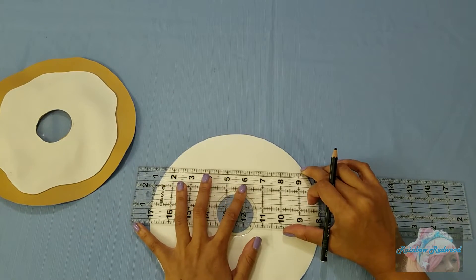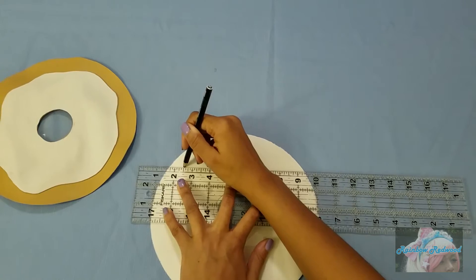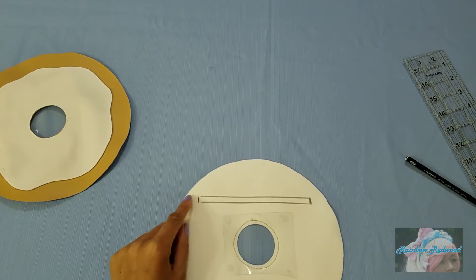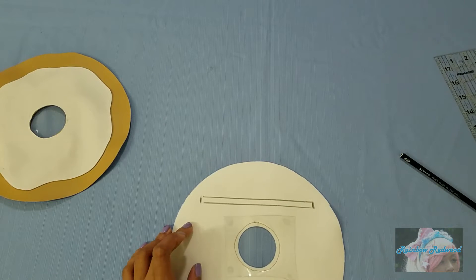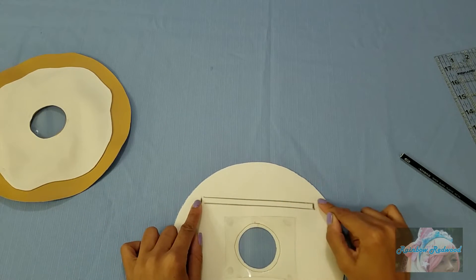Then you're going to box these two lines in making sure that it just measures six inches and then you're going to cut this little skinny rectangle out.